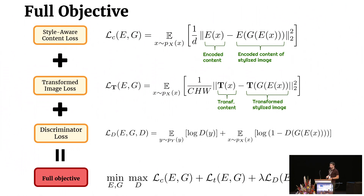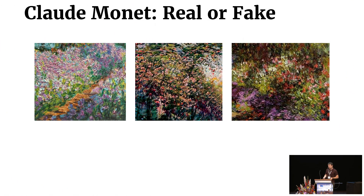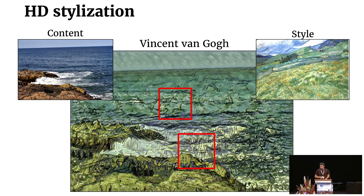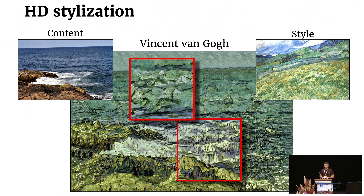Our full objective function is composed of three losses: style-aware content loss, transformed image loss, and discriminator loss. As a visual test, three image patches were shown — the middle one was generated by us, while the others were painted by Claude Monet. In a high-resolution stylization in the style of late Van Gogh, the bottom region shows prominent white brushstrokes in the vertical direction, while the top region has thinner brushstrokes in different directions, demonstrating that our approach can generate diverse brushstrokes for a specific style.